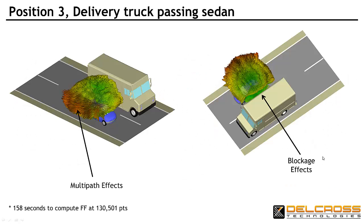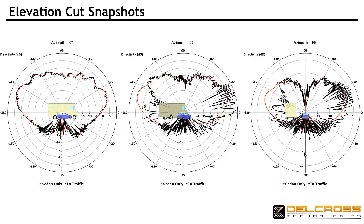Finally, we consider the situation where the van is pulled alongside the car. Blockage and multipath are most pronounced in this situation. From these elevation cuts, the destructive interference in the antenna performance caused by the proximity of the delivery van is clearly shown. The interference will have significant impact on the inter-vehicle communication link.